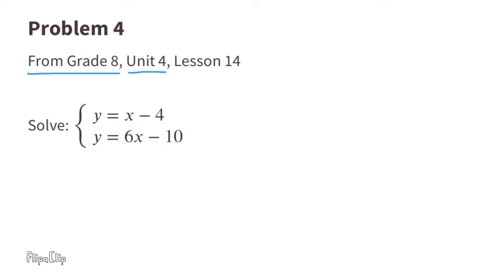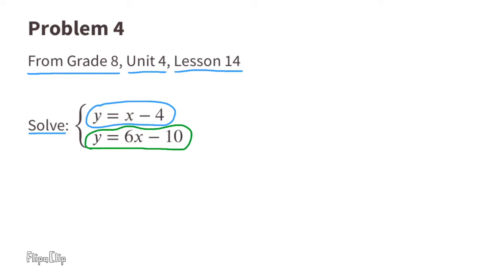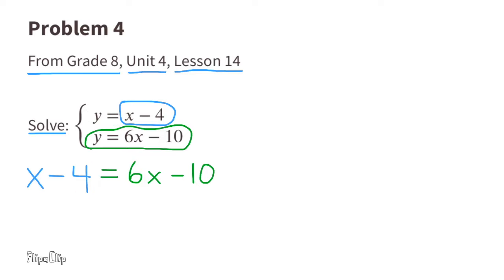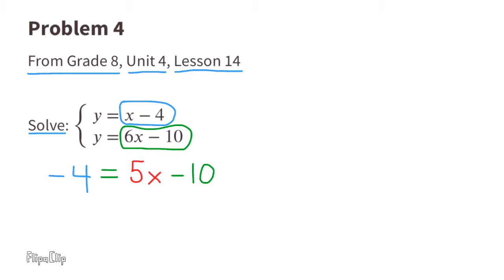Problem number four, from 8th Grade Unit 4 Lesson 14. Solve: y = x − 4 and y = 6x − 10. We can use the first equation y = x − 4 and plug it into the second equation where it says y. Substitute y with x − 4, so now it reads: x − 4 = 6x − 10. Subtract x from both sides: 6x − x is 5x. To get the x term by itself, add 10 to both sides.